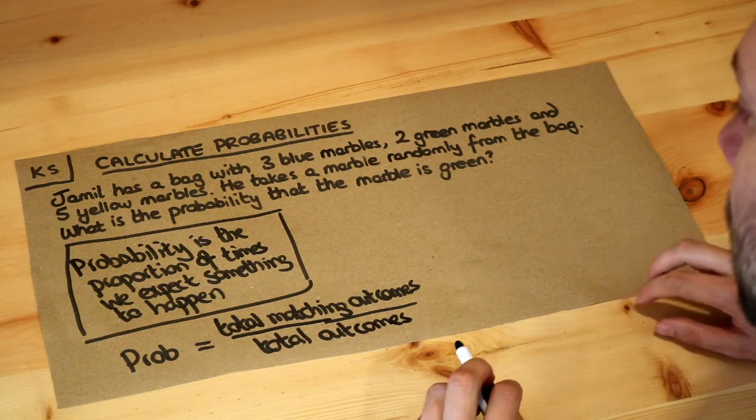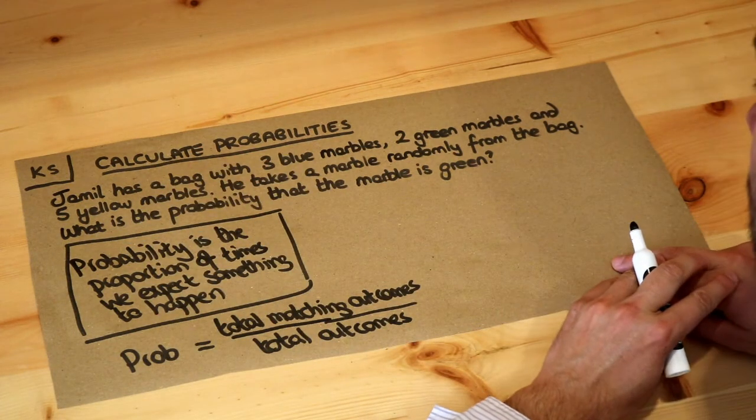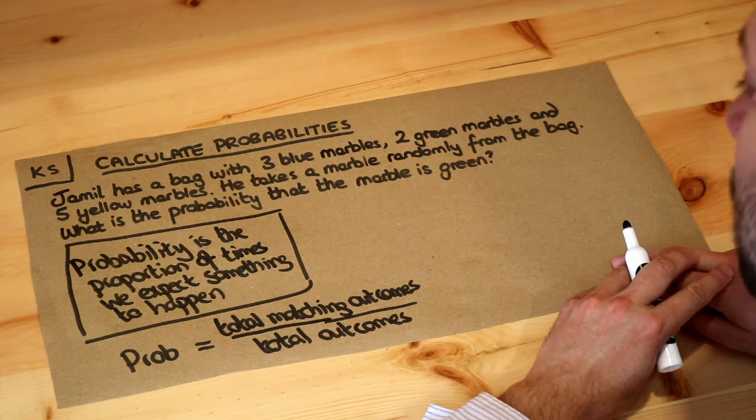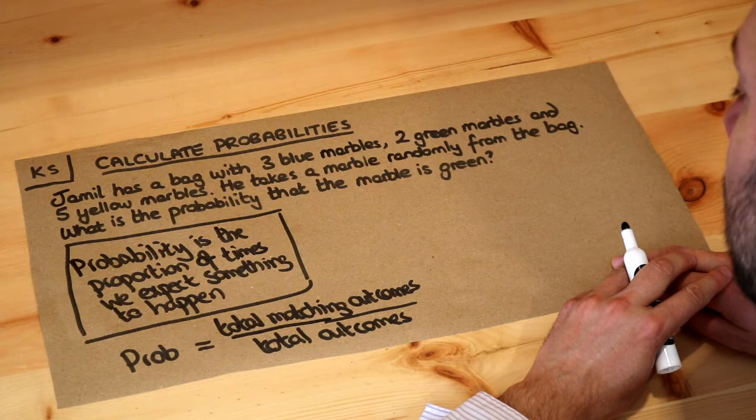So how am I going to use this formula? Jamil has a bag with three blue marbles, two green marbles, and five yellow marbles. He takes a marble randomly from the bag. What is the probability that the marble is green?